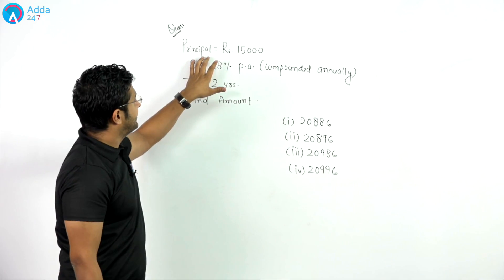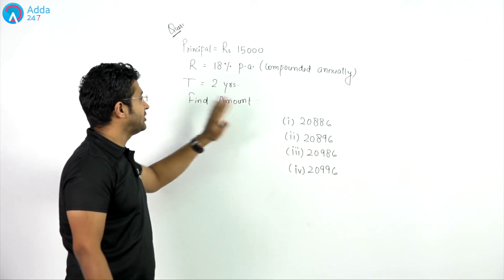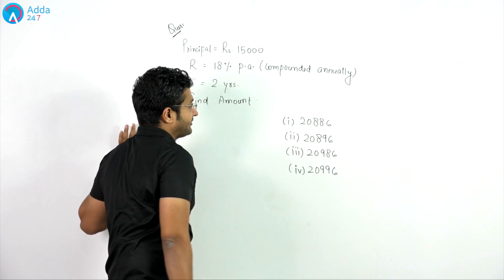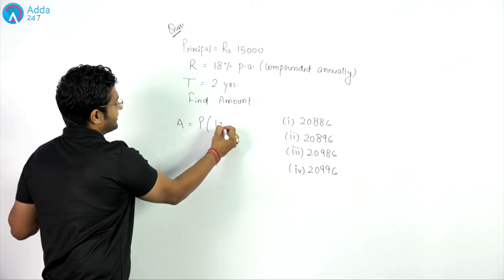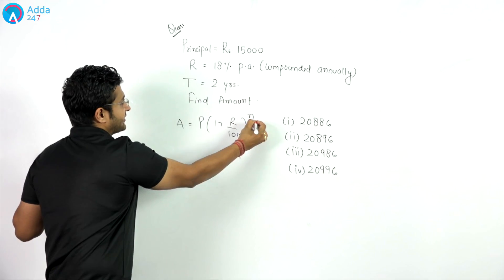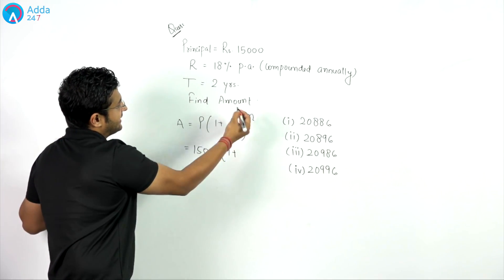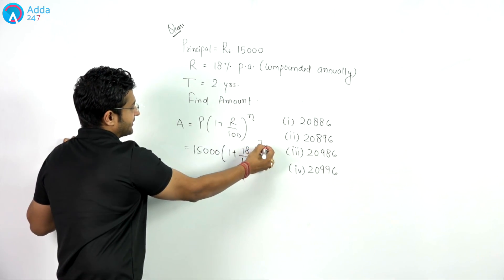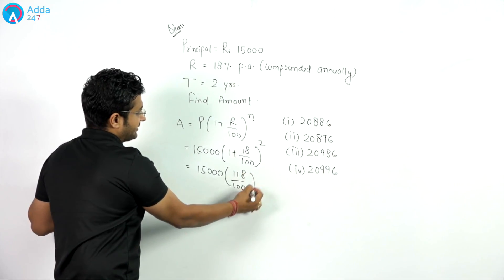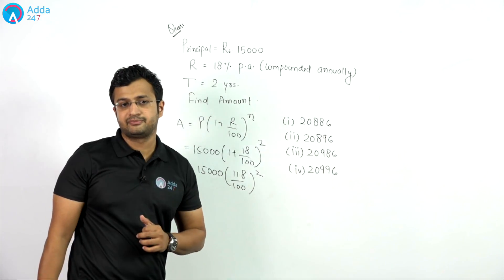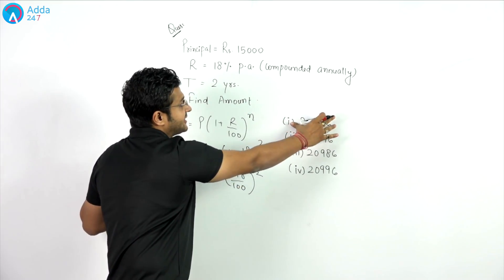Now we have a question. Principal is 15,000 rupees, rate is 18% per annum compounded annually, and time is 2 years. You have to find the amount from four given options. The formula for compound interest amount is: Amount = Principal × (1 + R/100) raised to the power of number of years. So it becomes 15,000 × (118/100) squared. After setting this up, you do not need to solve it further — just find the digital sum of this expression and match it with the digital sums of the given options.